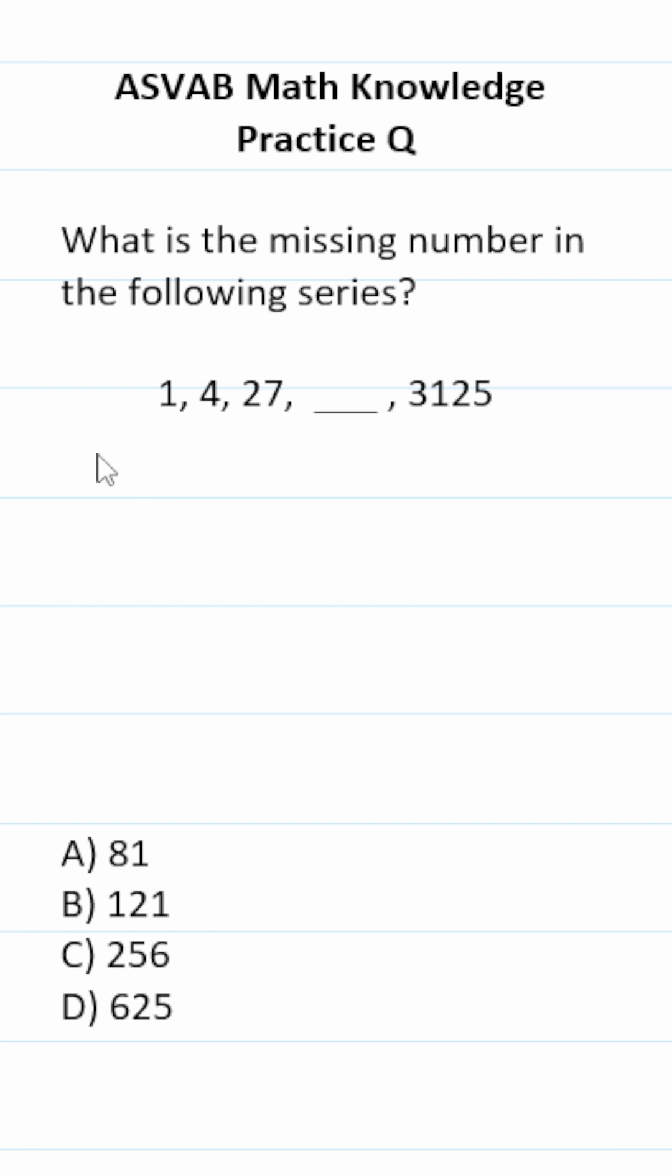All right, so the pattern is as follows. We have 1 to the 1. 1 to the first power is 1. We have 2 squared. 2 times 2 is 4. 3 to the third. 3 times 3 times 3 is, in fact, 27.